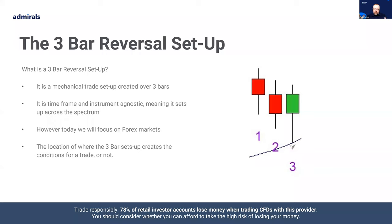Today I'm going to focus mostly on the FX market because that's the main one I trade, but as I said, the setup appears across all asset classes. And actually, it's the location of where the three bar sets up that creates the conditions for the trade or not. You could just mechanically trade every single three bar setup you see, but what I have found through my own trading is that it's particularly where it sets up that helps me recognize the higher probability examples.